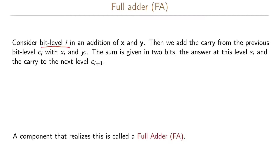...of the two vectors x and y, we add the carry from the previous bit level ci with xi and yi. This sum is given in two bits: the answer at the current level is si, and the carry to the next level is ci+1.